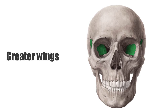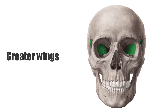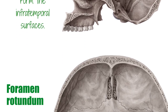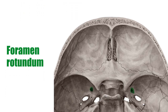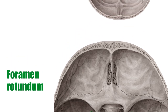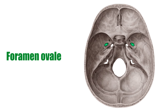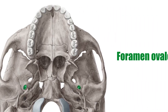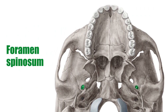The greater wings arise posterolaterally from the body. Their lateral surfaces form the infratemporal surfaces. Their anterior surfaces make up part of the posterior aspects of the lateral wall of the orbit. They contain two important openings near their roots: the foramen rotundum, which houses the maxillary nerve, and the foramen ovale, containing the mandibular nerve and the accessory meningeal artery. The foramen spinosum, which is the opening for the middle meningeal vessels and the spinous nerve, lies at the posterior margin of the greater wings.